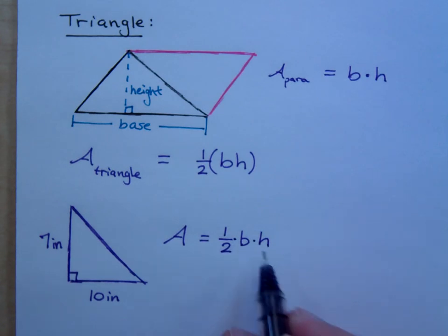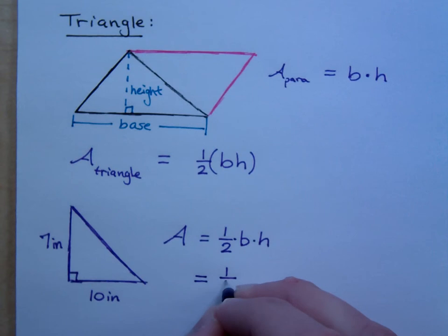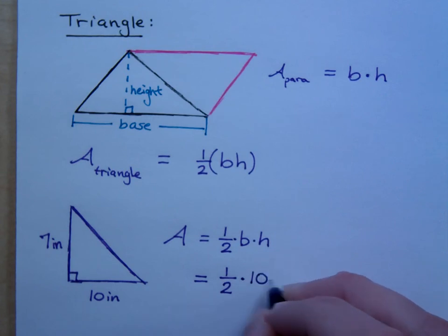The order doesn't matter since we're multiplying here. So, I have one half, which is always going to be there, times what's the base? 10 times the height, which is 7.